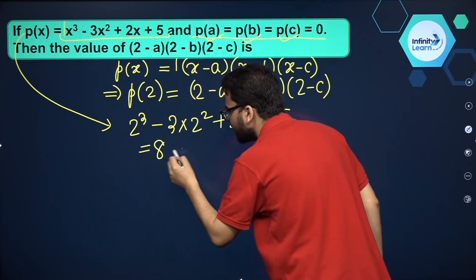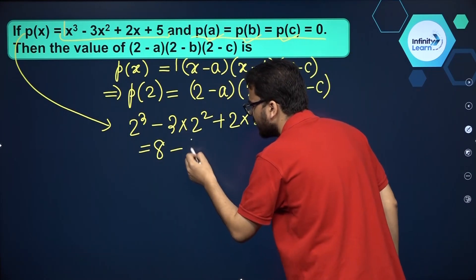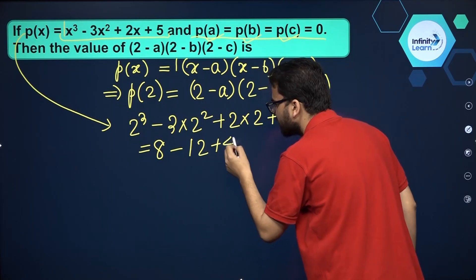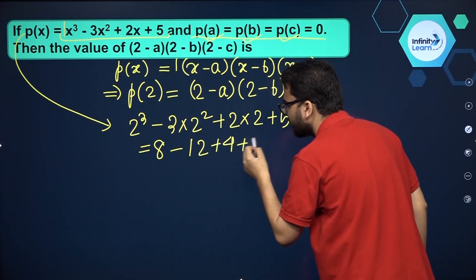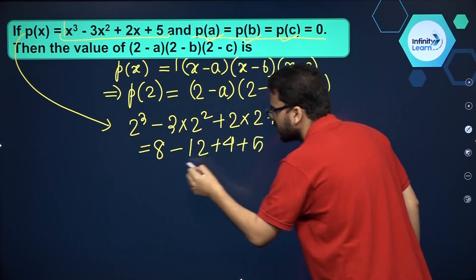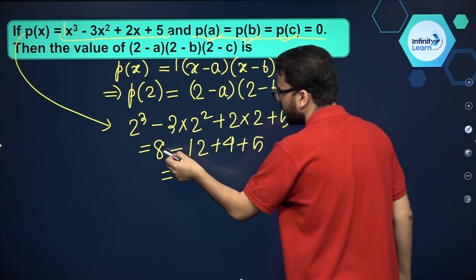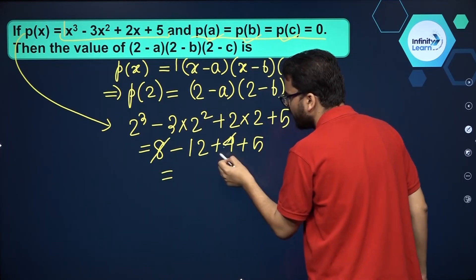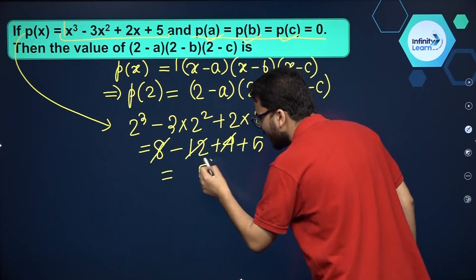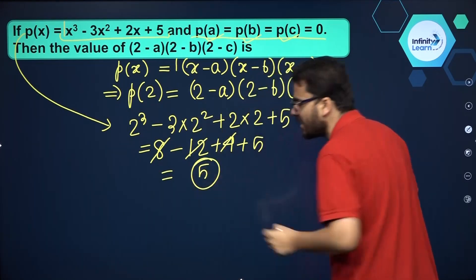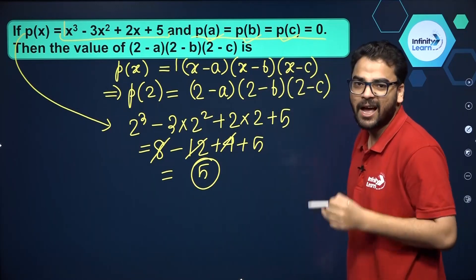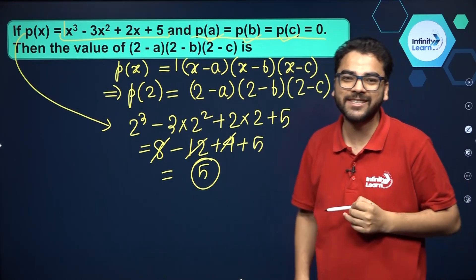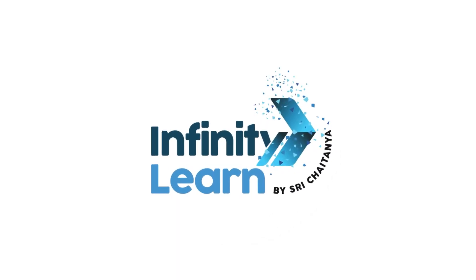This is 8 minus 12 plus 4 plus 5. You see, 12 minus 12 will get cancelled out, so basically 5 is the answer. I hope the question is clear to you. Thank you.